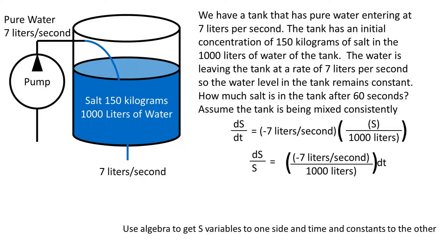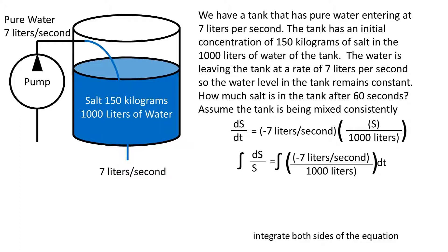So now, to solve the differential equation, we must use algebra to separate the s variables to one side, and the time and constants to the other. Now that they are separated, we can integrate both sides of the equation with respect to the delta or changing variable on each side.